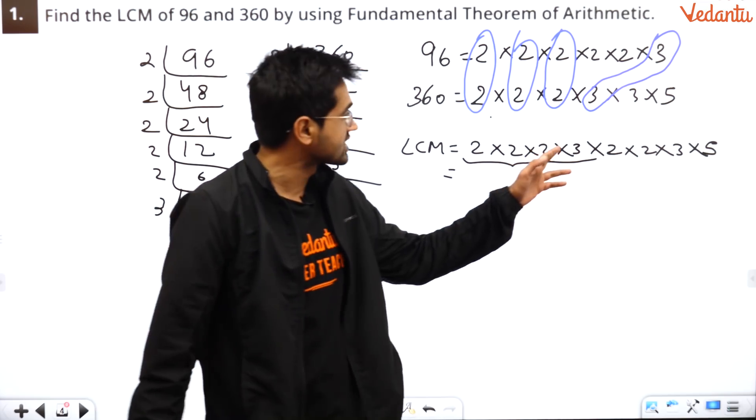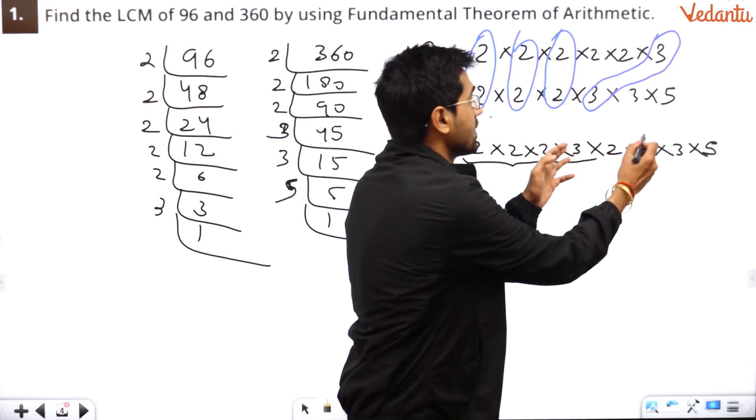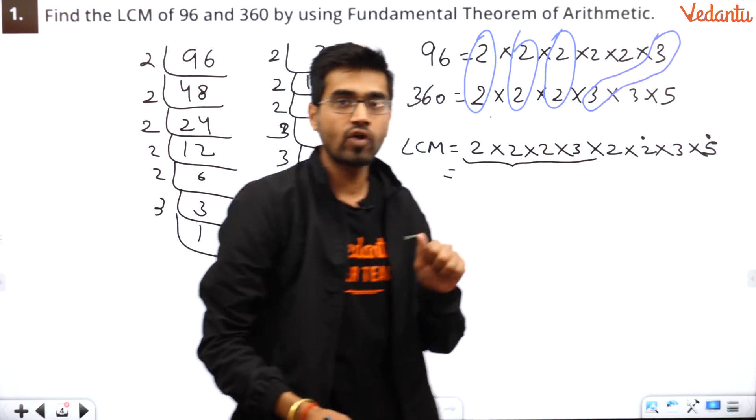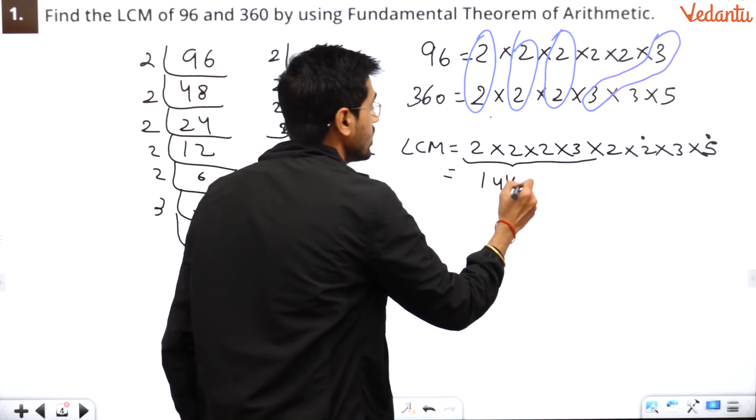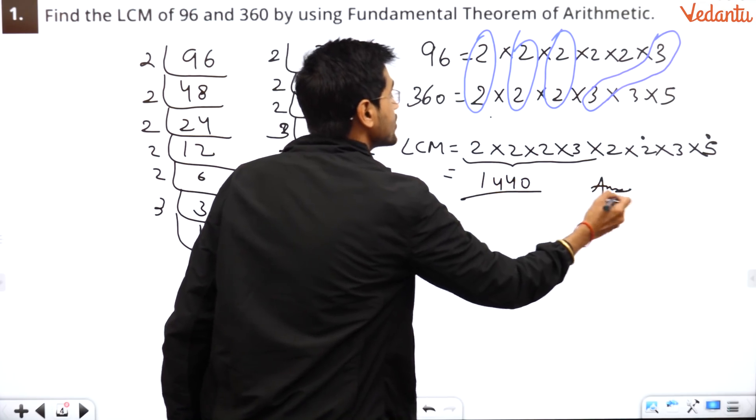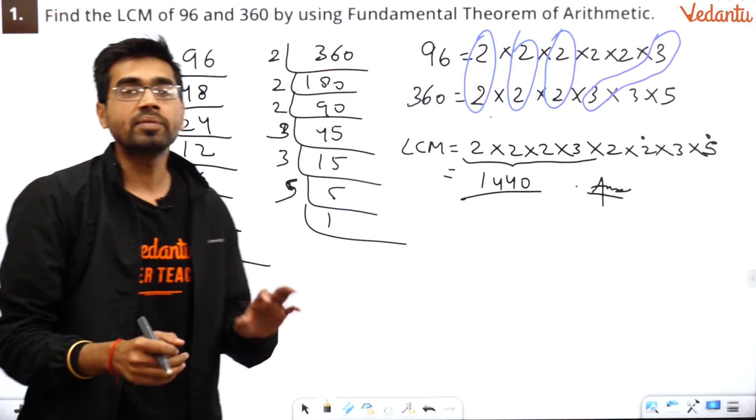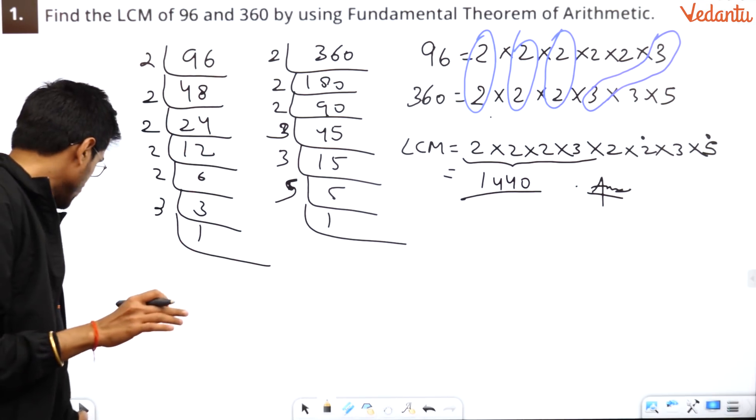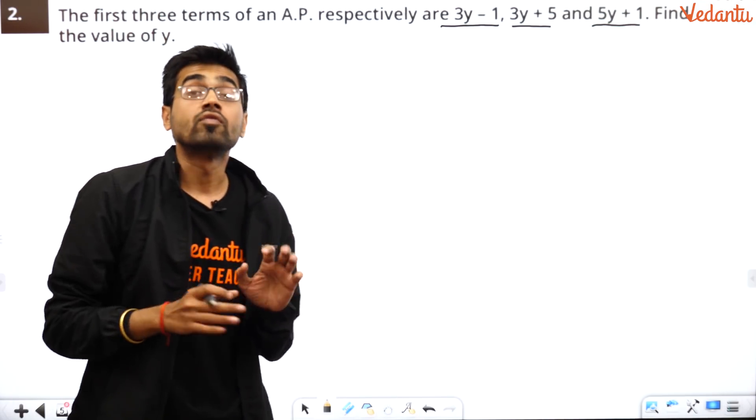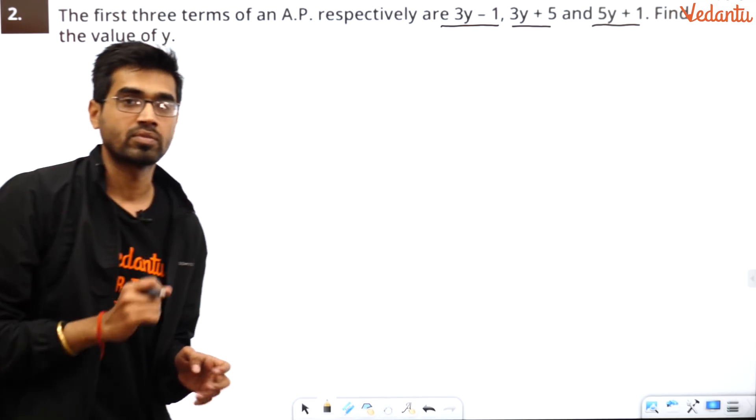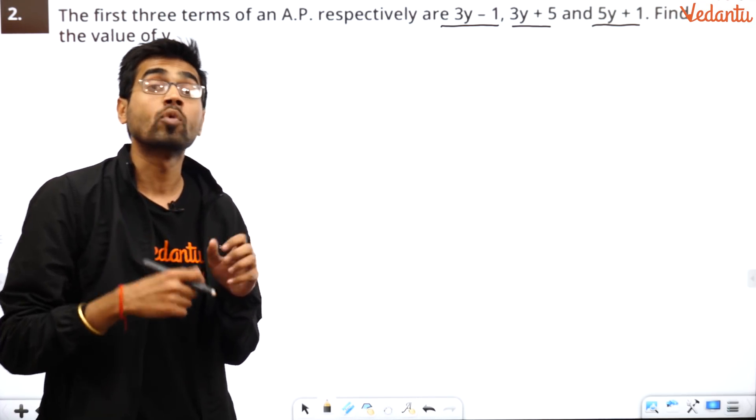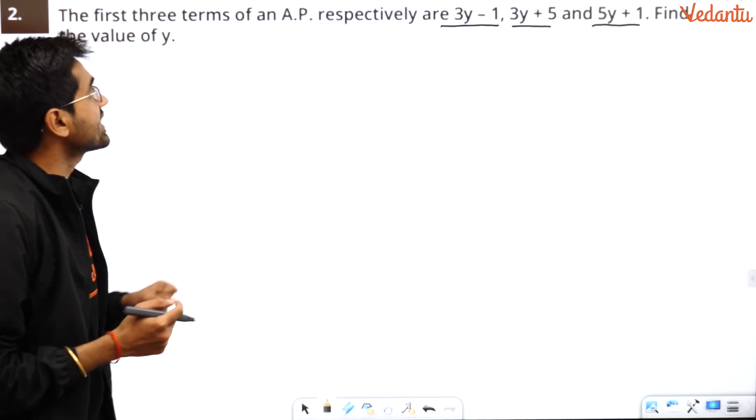So what is the LCM? The LCM is very simple. Two into two into two into three. Copy, paste the other terms. Two into two into three into five. Remember that you have to take two and five common. Because two into five is ten. You are smart. So multiply all the terms. You get eight, three is twenty-four, two is forty-eight. Forty-eight, three is one forty-four, into ten is one four four zero. Write it as your answer and move ahead. See, one mark question, don't waste time.